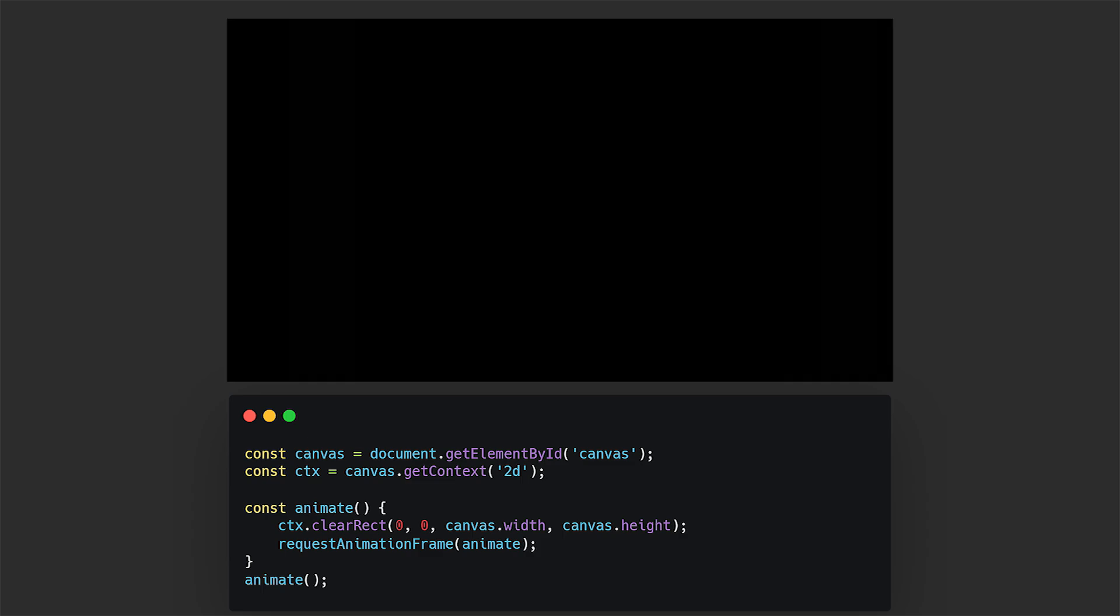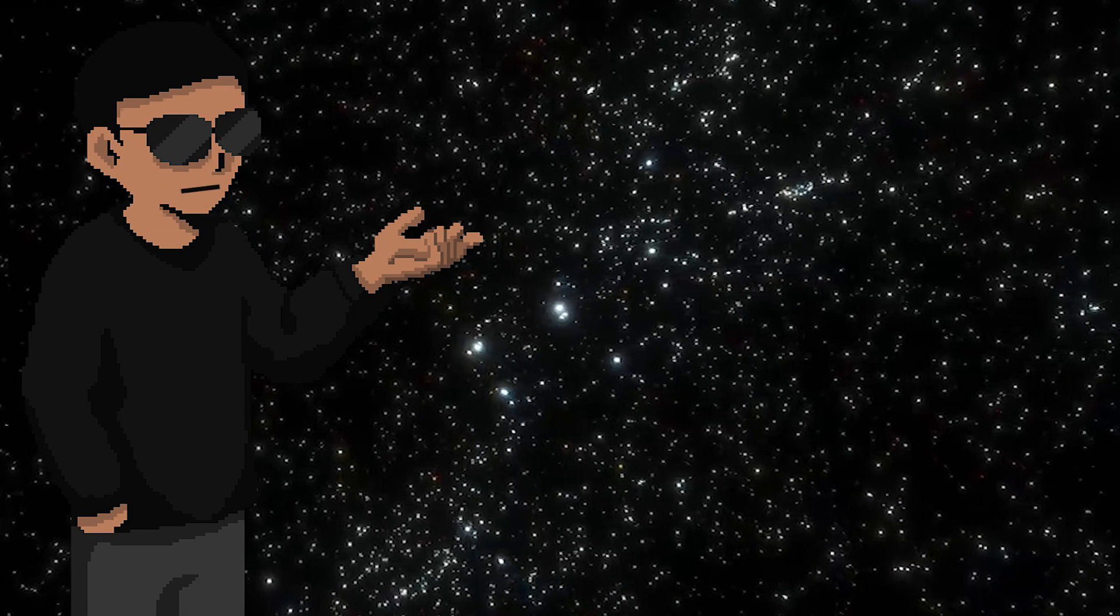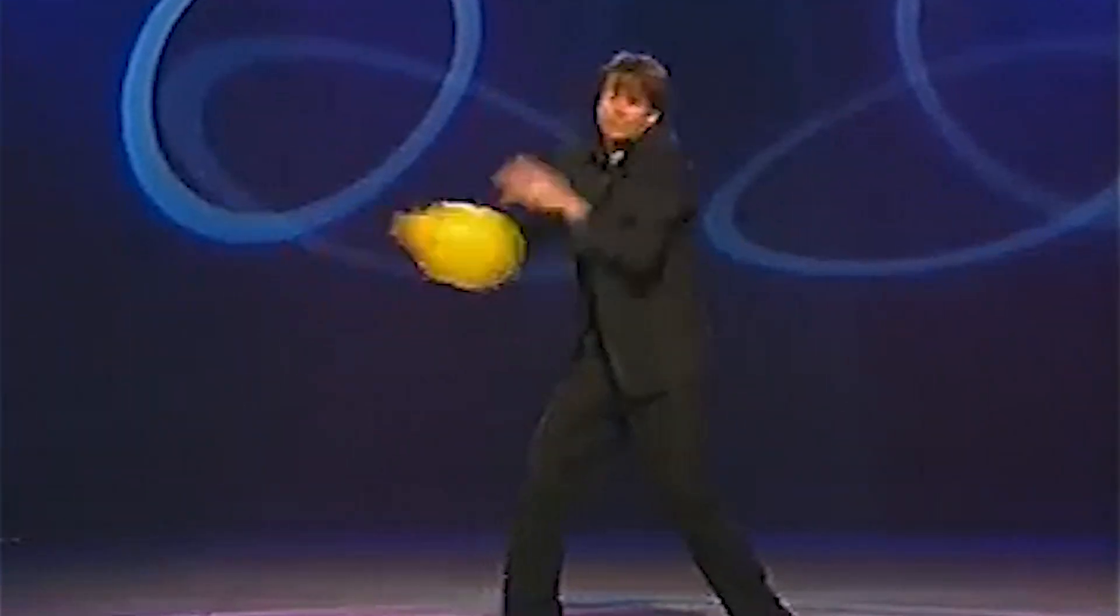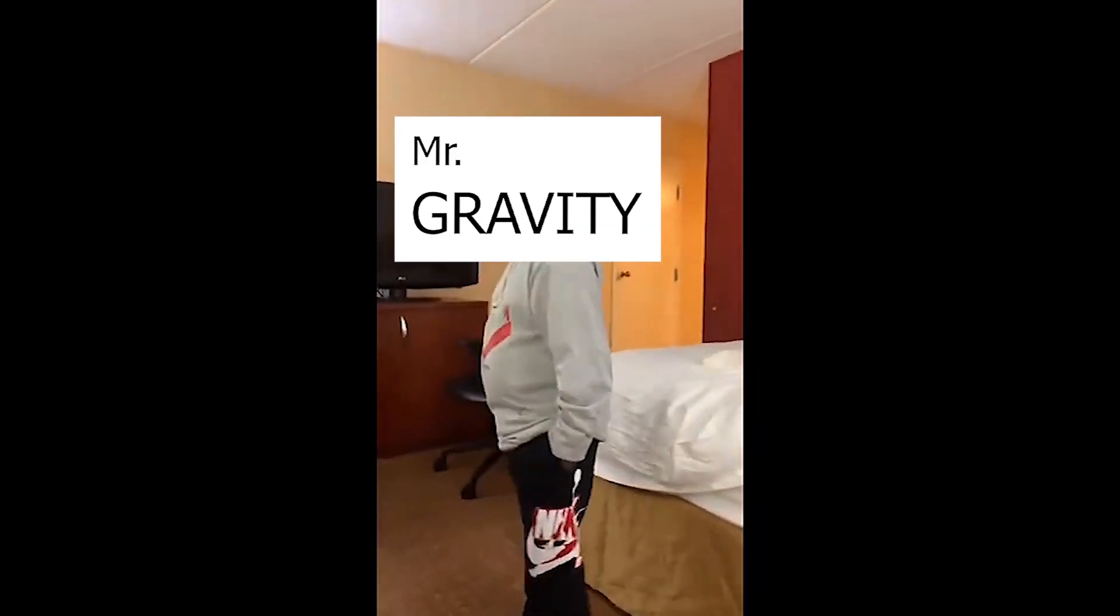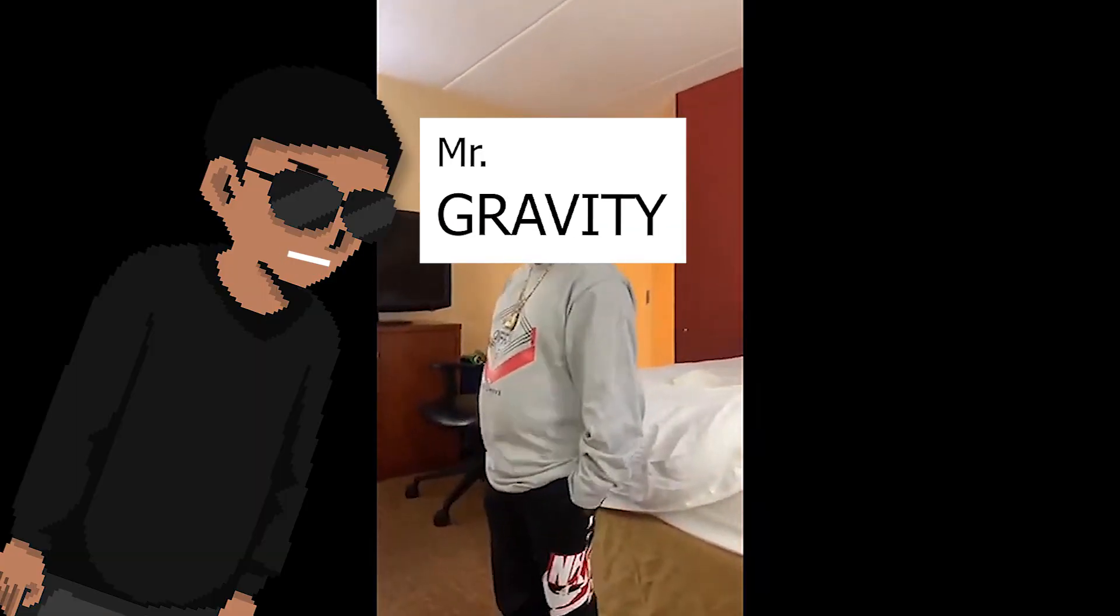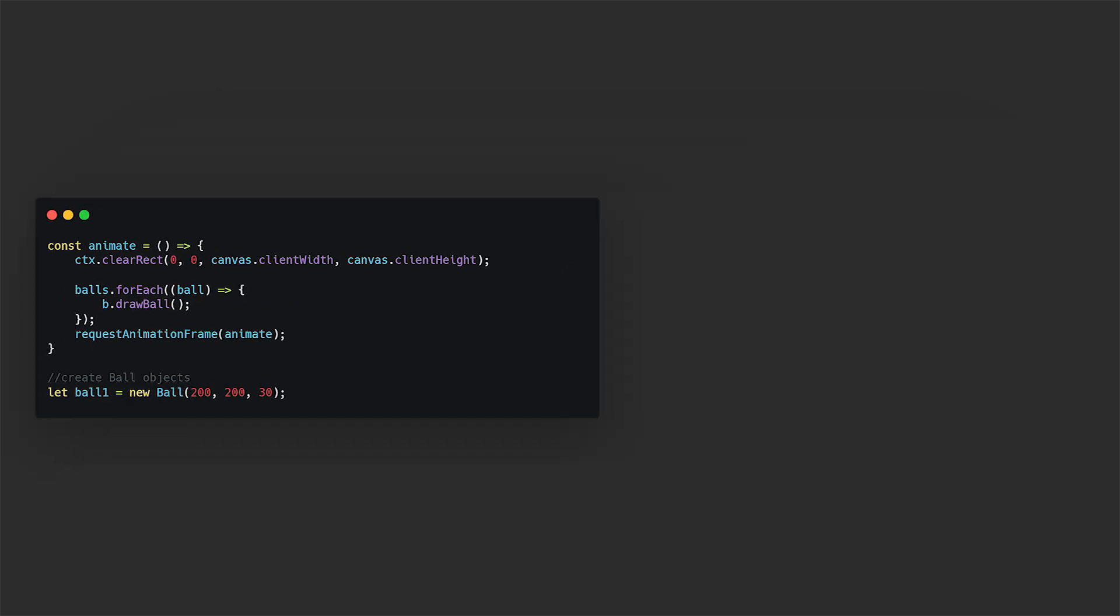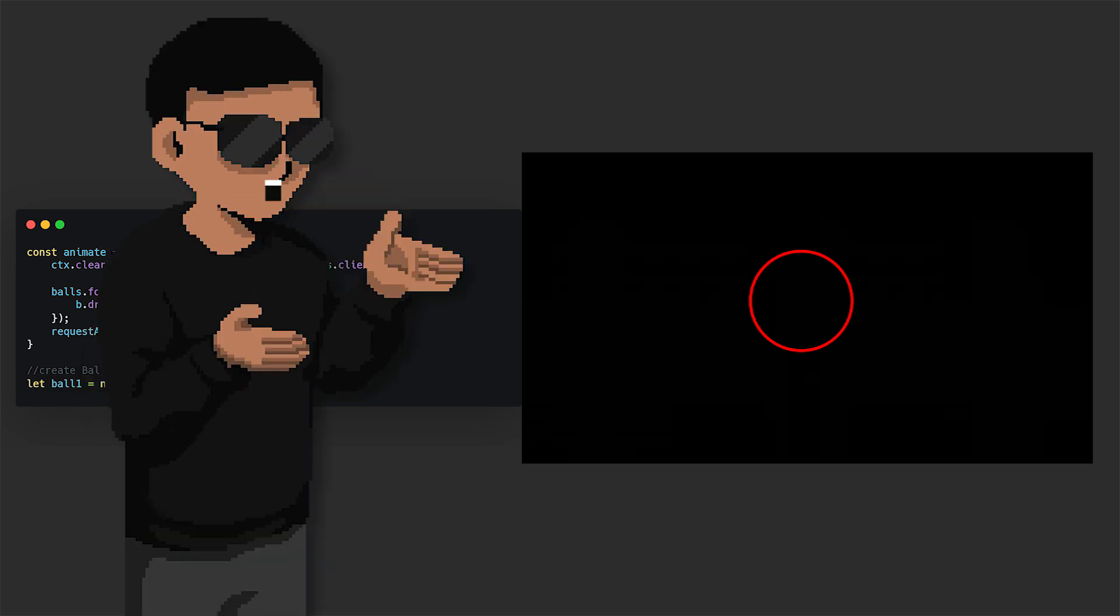We of course start by drawing the blank canvas. Now I want you to imagine that this environment is outer space. Hear me out. The point is to have as much control of our object as possible. And we can't do that with Mr. Gravity hanging around. I assume it's a guy. Now we draw our first object, which is a red ball. Now we want to be able to move our ball around, right?